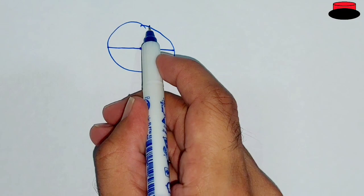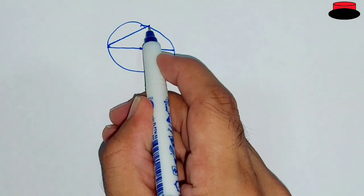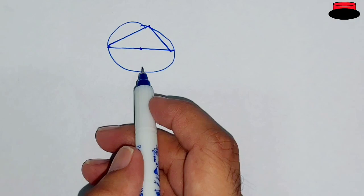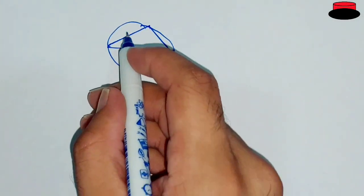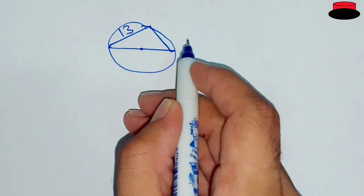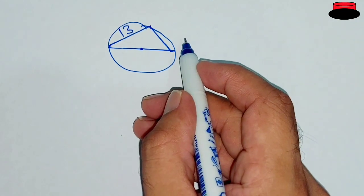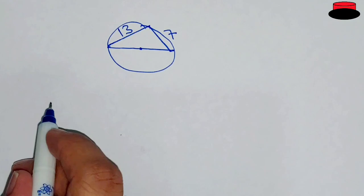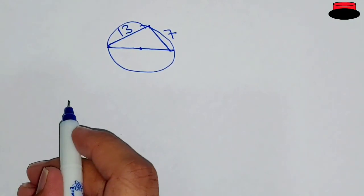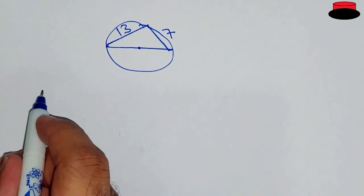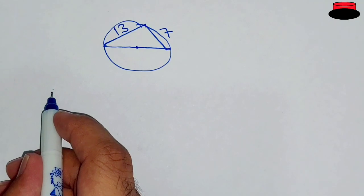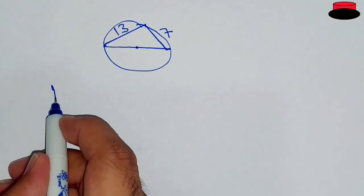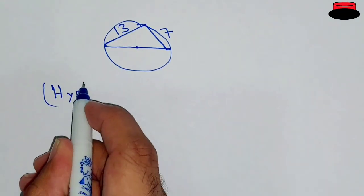This line is passing through the center of the circle, so this is the diameter. This side is 13 units and this side is 7 units. We have to find out the radius, which means we have to find out the diameter first, so we have to find out the hypotenuse in this triangle.